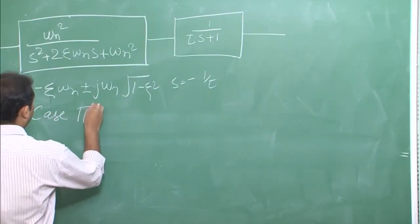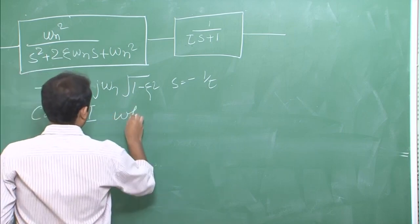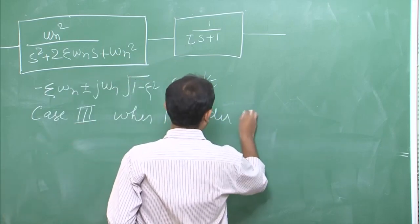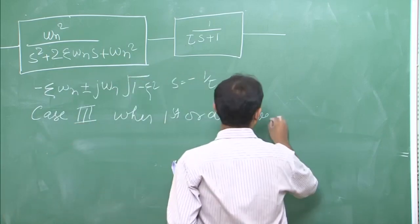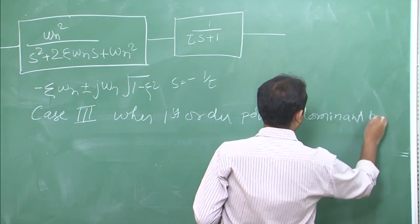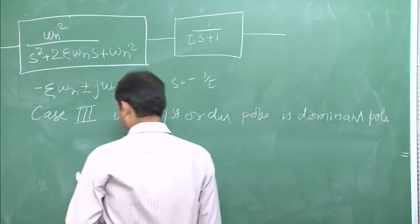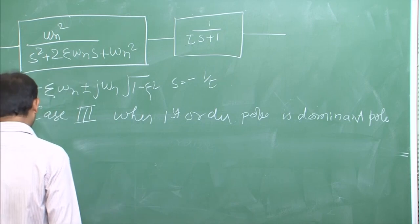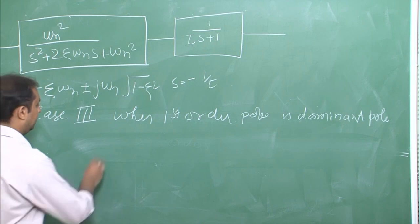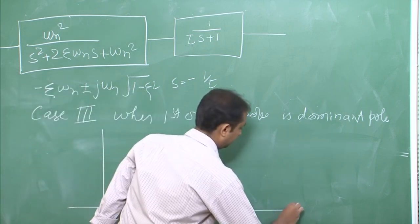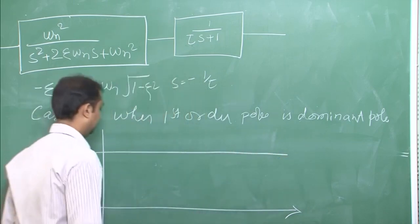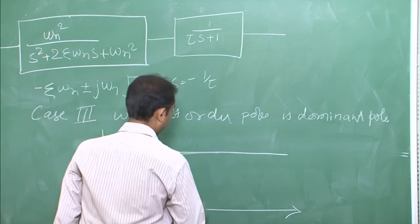Case 3: The first-order pole is the dominant pole. When this scenario applies, the response will be similar to a second-order over-damped system.